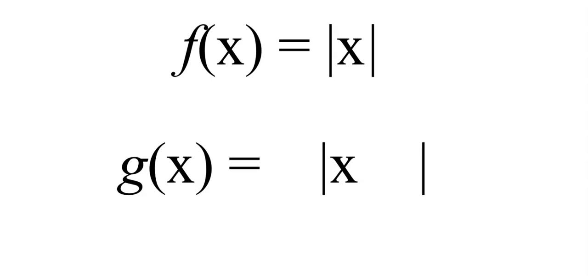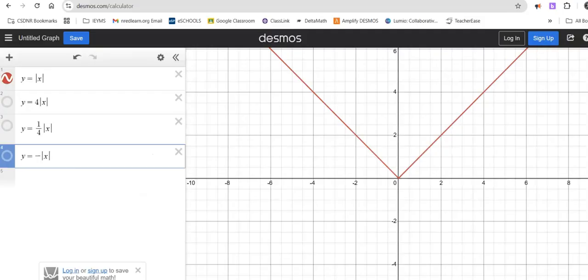Let's take a look. Here's our parent function, the absolute value graph. Here's with a coefficient of 4, stretched and more narrow. Here's with a coefficient of 1 fourth, compressed or more wide. And here's with a negative coefficient, reflected over the x-axis.